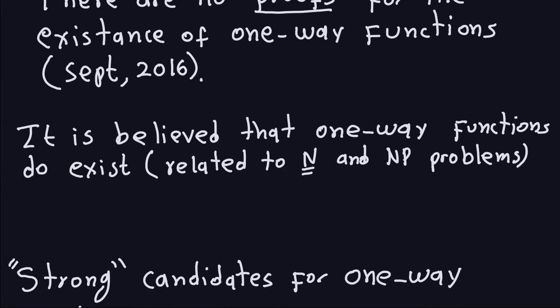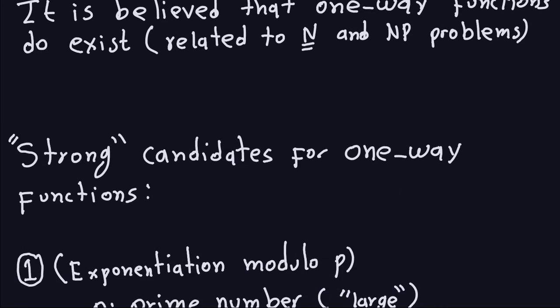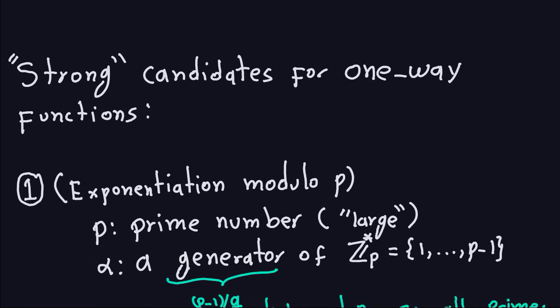Even though there are no proofs, there are some strong candidates for one-way functions. These are functions that experts — or at least most of them — agree there is strong evidence will probably be one-way functions. I'm going to show you three types that are believed to be one-way functions.